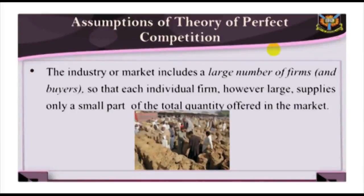Three, the industry or market includes a large number of firms and buyers, so that each individual firm, however large, supplies only a small part of the total quantity offered in the market. The buyers are also numerous so that no monopolistic power can affect the workings of the market. Other important assumptions include perfect information about market prices and perfect mobility of products.